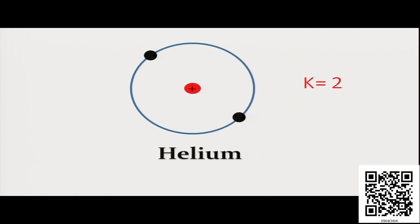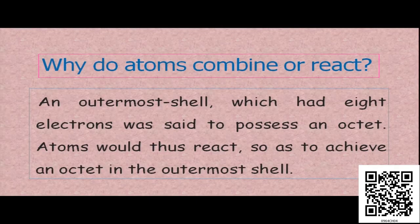And looking at all this arrangement, like in case of neon, argon — other elements also try to achieve this octet in their outermost shell by combining with other atoms, atoms of other elements. So now you know the reason why atoms combine or atoms react to form molecules or compounds.